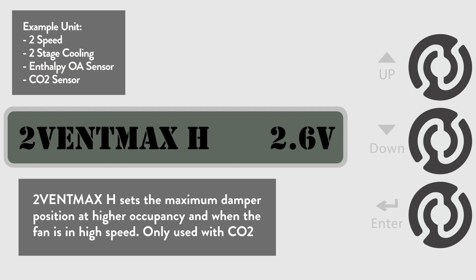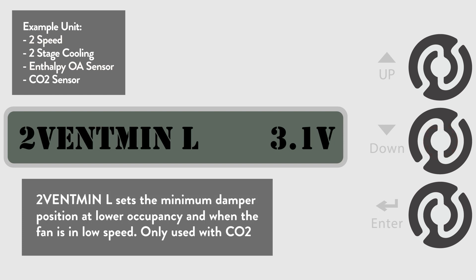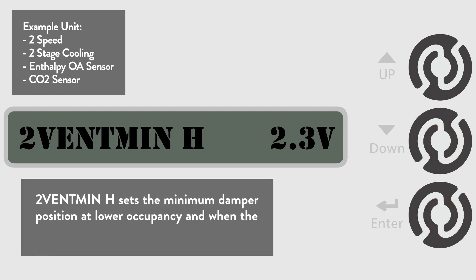Now we will set the minimum outside air position when using a CO2 sensor. This would typically be for spaces with lower occupancy levels. Go to the 2 Vent Min L menu to set the CO2 sensor's minimum non-free cooling position when the unit is in low speed. The default is 3.1 volts, but we are going to change that to 2.9 volts. For the 2-speed unit, set the CO2 sensor's minimum non-free cooling position when the fan is in high speed. The default is 2.3 volts, but we are going to change that to 2.1 volts.